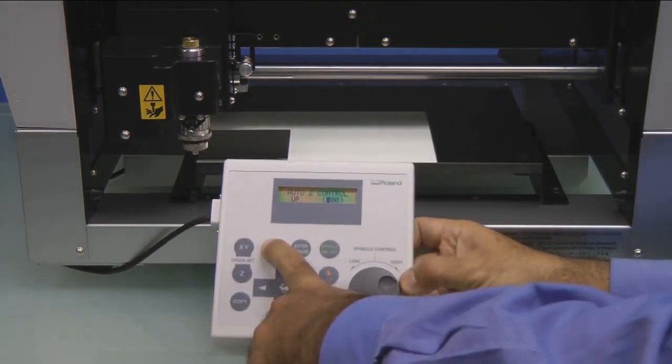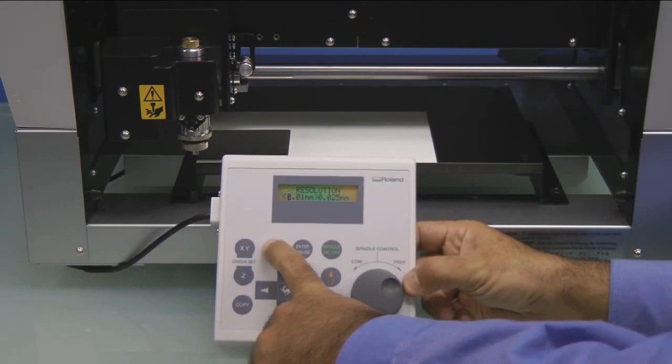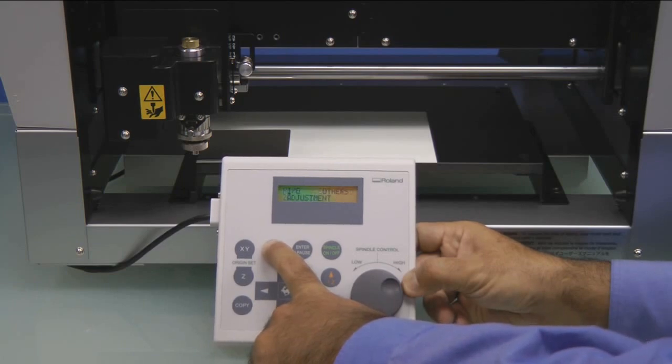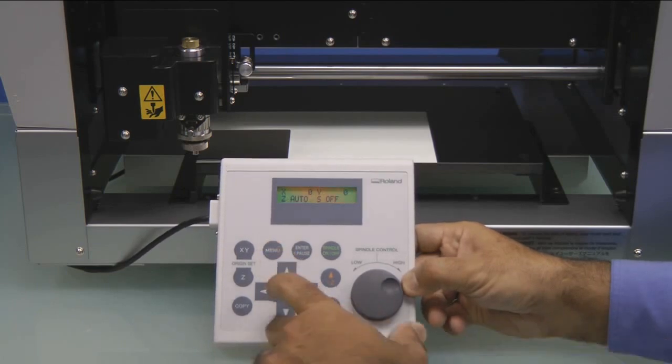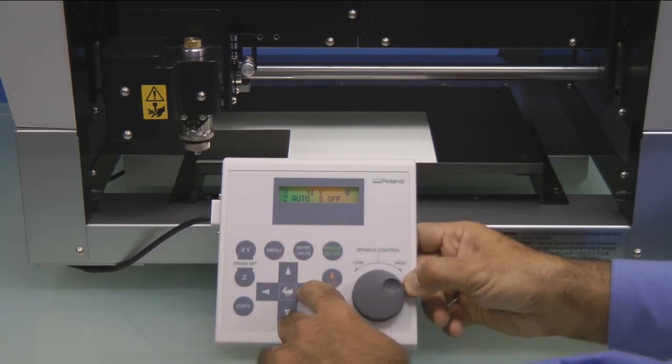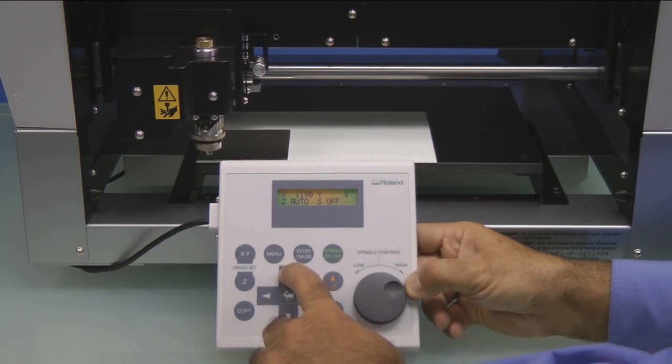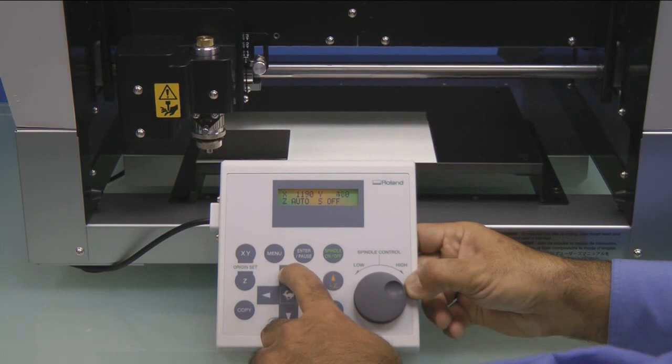Press the Menu key multiple times until you get back to the X, Y, Z, Spindle Speed menu. This we refer to as the default menu. Now using the arrow keys, move the nose cone above the material to a flat area away from the corner.